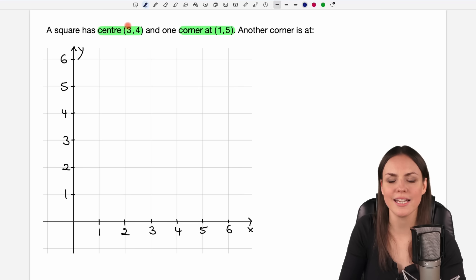So the center is at (3,4). The x coordinate is 3 on the x axis, and the y coordinate is 4. So here is the center of our square. I call this point M. Then we get a corner at (1,5). So the x coordinate is 1, the y coordinate 5. This is a corner of our square. I call this point A.